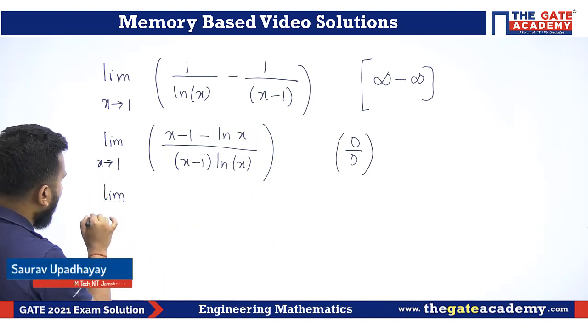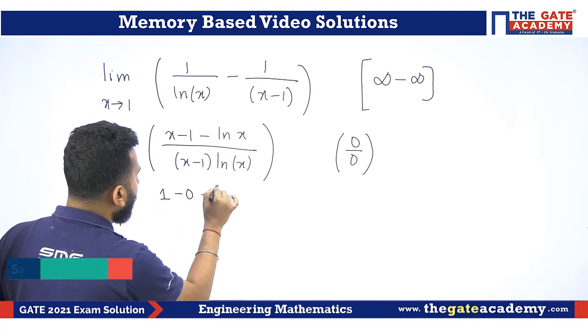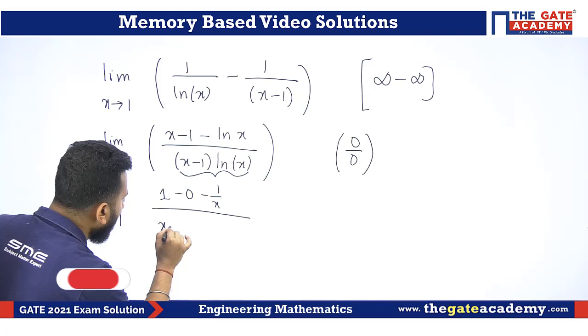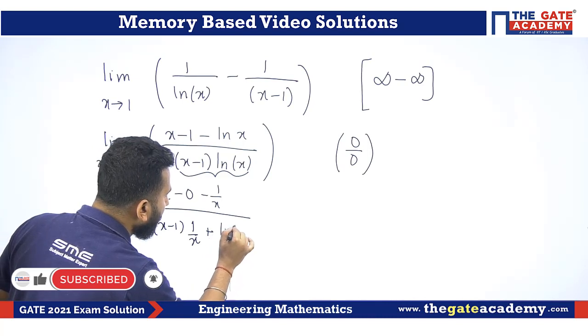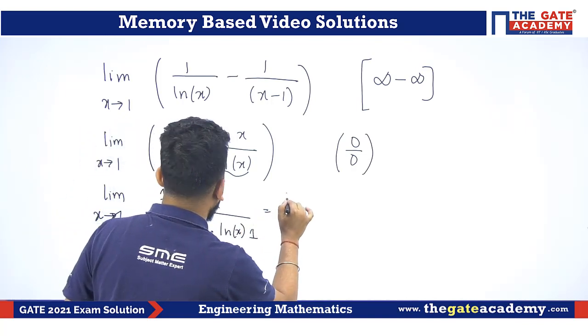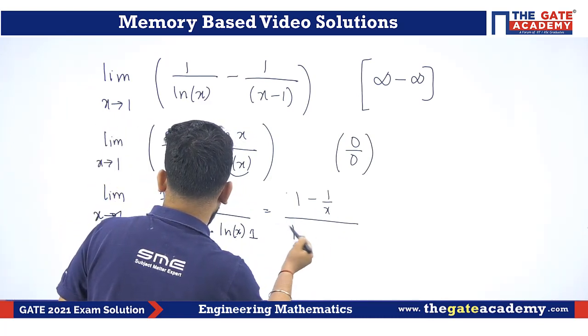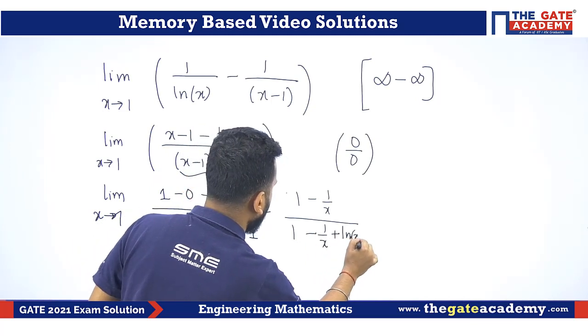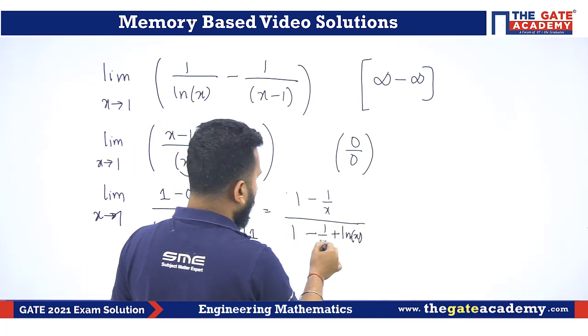So differentiate the numerator and denominator. It is 1 minus 0 minus 1 by x divided by, here I will be using product rule, so it is x minus 1 into ln x differentiation is 1 by x plus ln x into 1. Let me rearrange it. It is 1 minus 1 by x divided by 1 minus 1 by x plus ln of x. If I again check its form, if I substitute, it will be 1 minus 1, 0, 0, 0. So it's again 0 by 0 form. Again we can apply L'Hopital's rule.